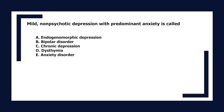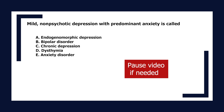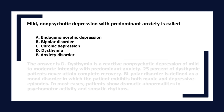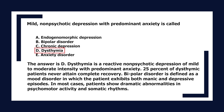Mild, non-psychotic depression with predominant anxiety is called: A. Endogenomorphic depression, B. Bipolar disorder, C. Chronic depression, D. Dysthymia, E. Anxiety disorder. The answer is D. Dysthymia is a reactive, non-psychotic depression of mild to moderate intensity with predominant anxiety.